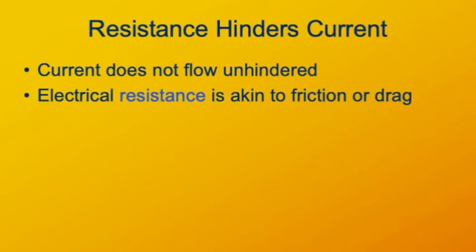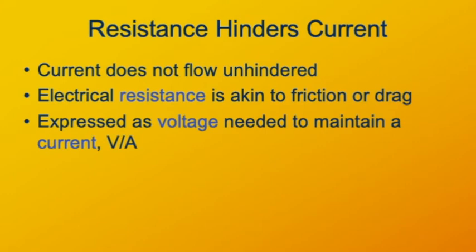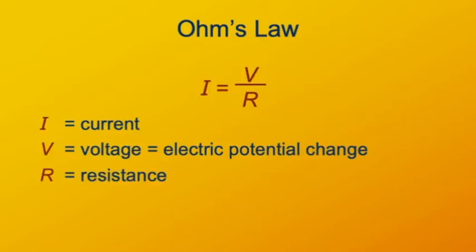We refer to this resistance as resistance. We measure it as the voltage that's required to maintain a given current through the conductor. We quantify this by Ohm's law, which says that the current through an object is equal to the voltage across it divided by its electrical resistance. The unit of electrical resistance is the volt per ampere, which is also known as the Ohm. It has this funny symbol for it. This is the Greek capital letter Omega. The reason for that is Omega sounds like Ohm.